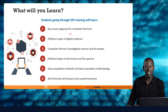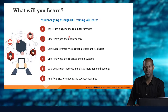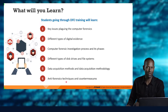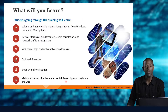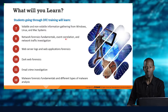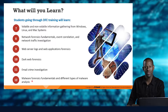You're going to learn the key issues that make it important to have people in this field and the different types of digital forensics. We'll look at the investigation process and its phases, types of disk drives and file systems, and methods of data acquisition. We'll also cover anti-forensic techniques and countermeasures, the differences between volatile and non-volatile information gathering across operating systems like Linux, Mac, and Windows, correlating events and network traffic, web server investigation, web logs and web applications, dark web, email, and malware forensics.